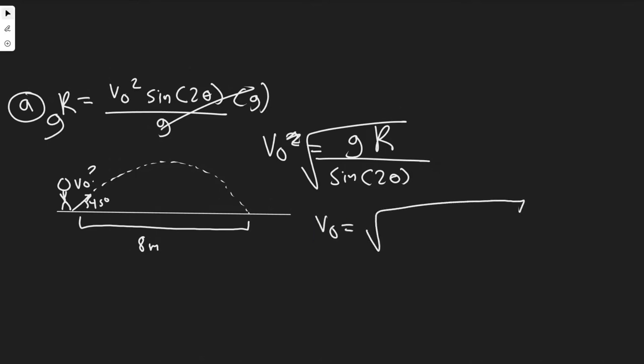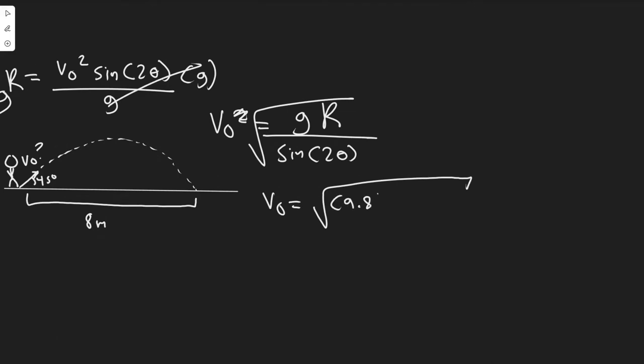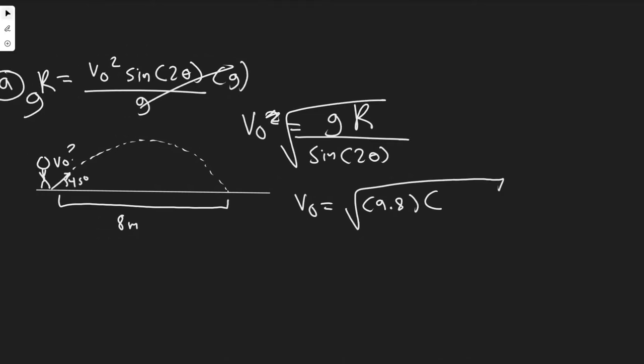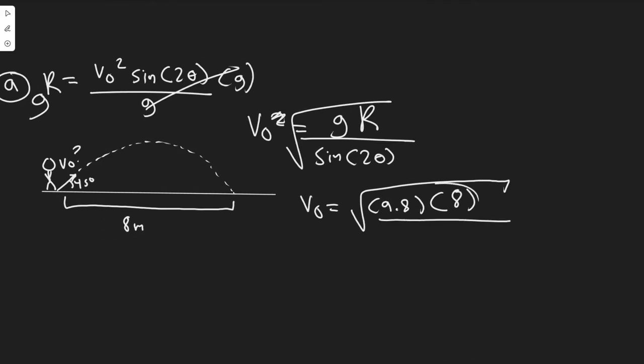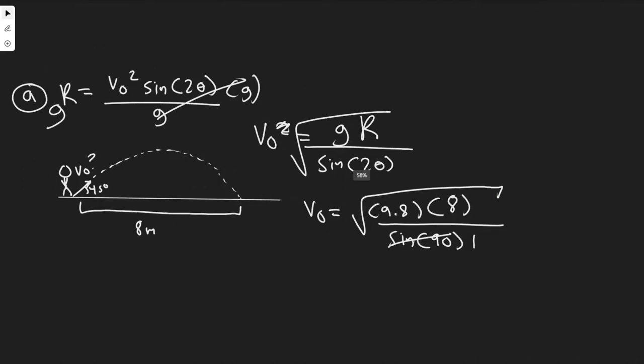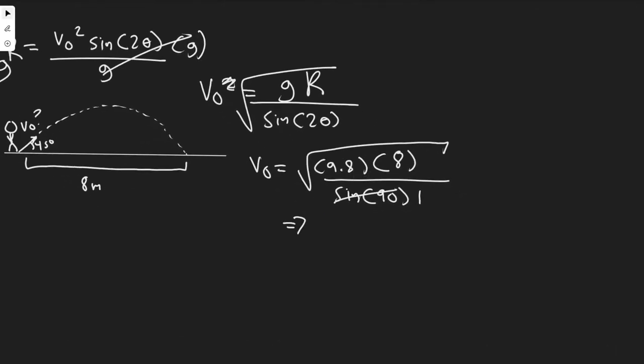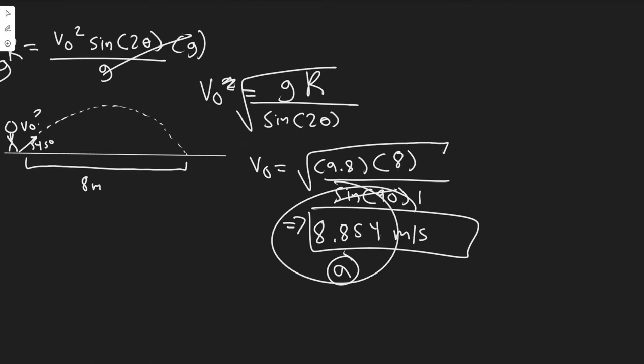So we're going to do the square root of g, which is 9.8 meters per second squared, times R, which is 8 meters, divided by the sine of 2 times the angle. 2 times 45 is 90, and sine of 90 is 1. So all we're doing is taking the square root of 9.8 times 8. So you're going to have 8.854 meters per second. So your answer in A, the takeoff speed, is 8.854 or 8.9 meters per second.